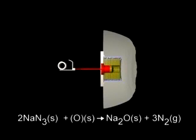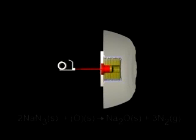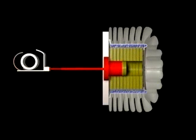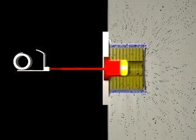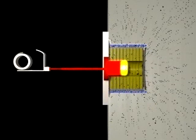In practice, an oxidant is added to react with the sodium to form sodium oxide. When the reaction is triggered by a sudden application of heat, the hot nitrogen gas formed by decomposition of the sodium azide expands into the airbag. Expansion occurs in only about 50 milliseconds.